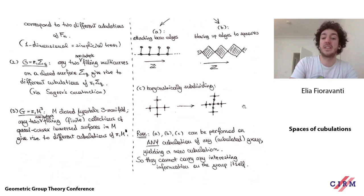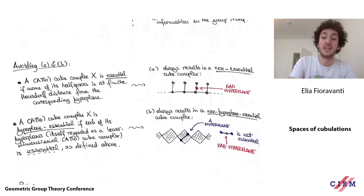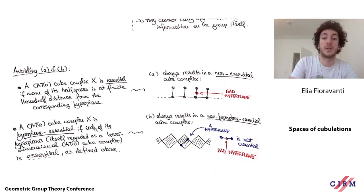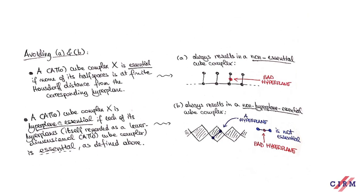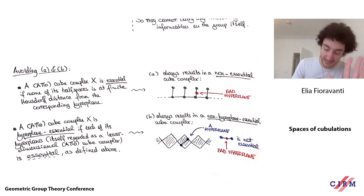We want to avoid these procedures, and the way to go is to restrict to CAT(0) cube complexes that are nice in some way. We're going to assume they satisfy two assumptions: being essential and being hyperplane-essential. This will stop us from performing at least procedures A and B. Barycentric subdivisions are not going to be a problem immediately — I'll talk about them later.